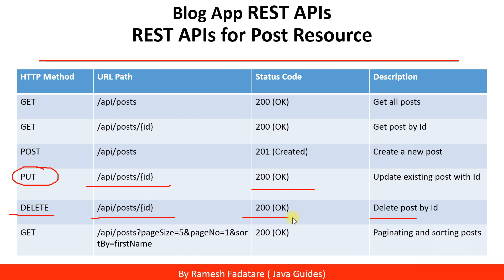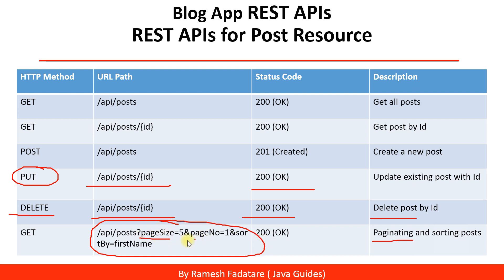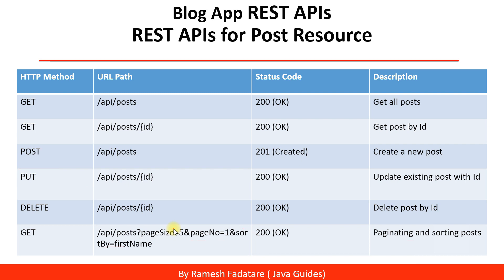For pagination and sorting, this is the REST endpoint URL. We use page size, page number, sort by, and sort direction parameters to provide pagination and sorting support for the Get All Posts REST API.